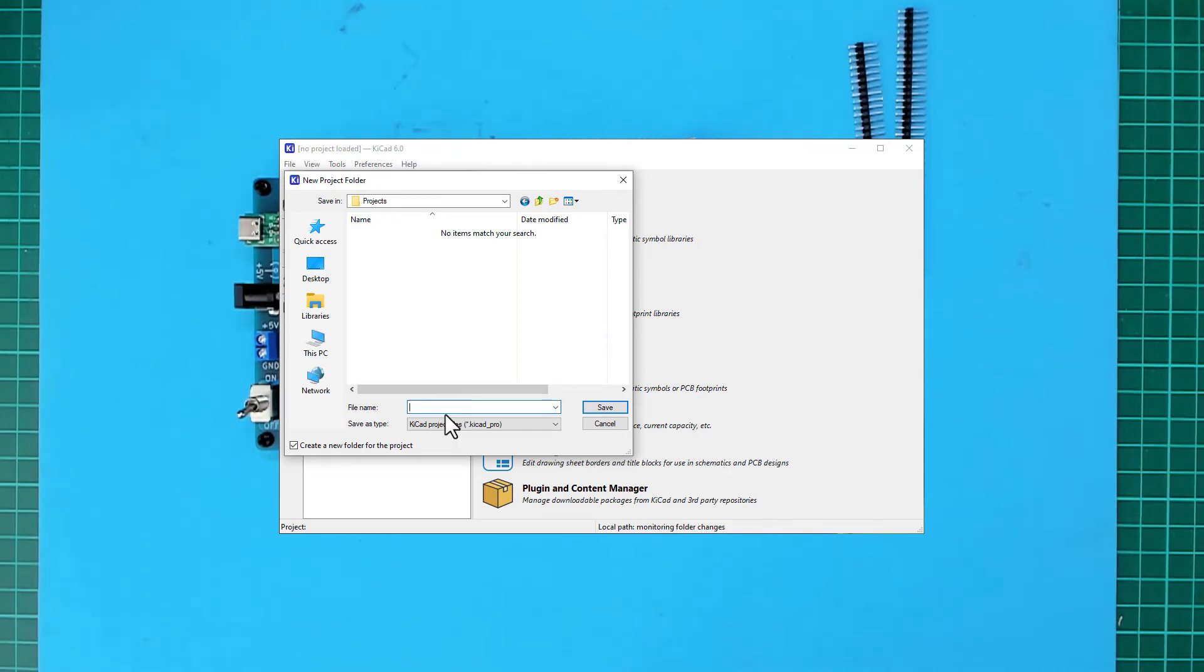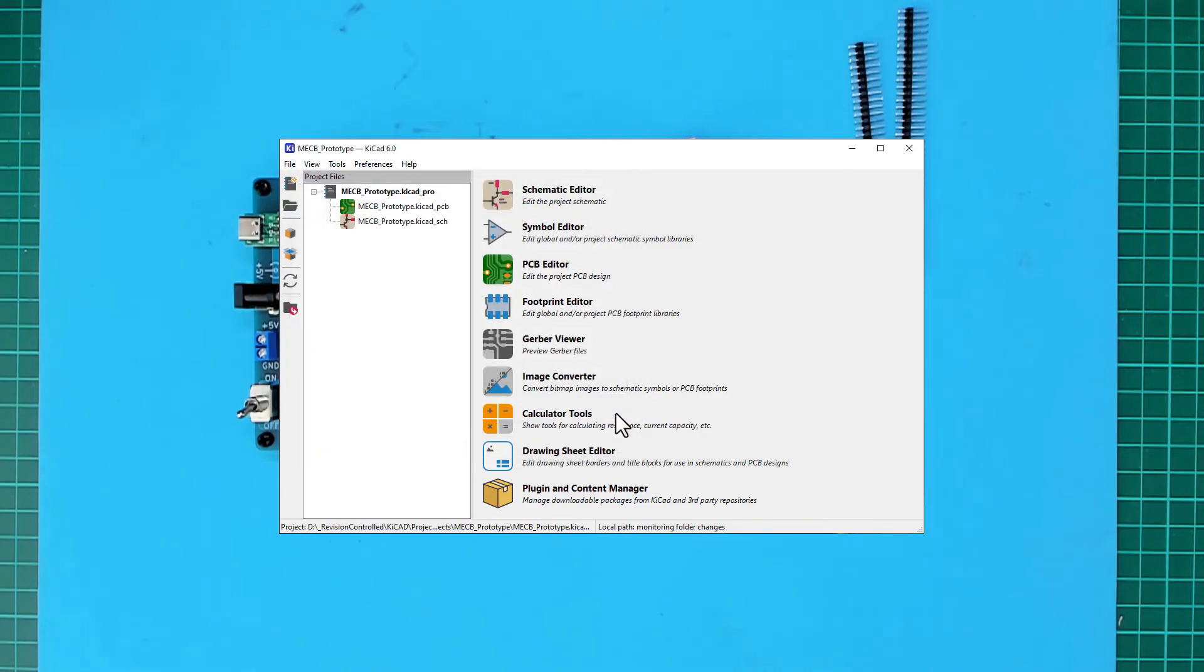And we'll call it MECB underscore prototype. Save. Now I open the schematic.